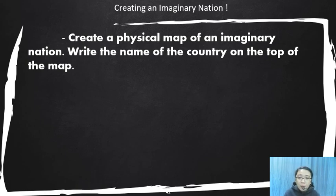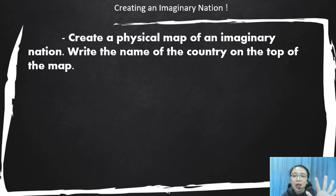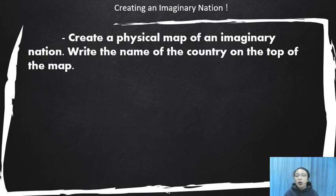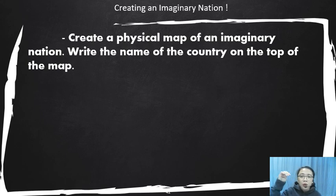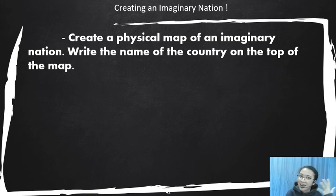Inside the map, you need to draw five unique land or water forms. For example, you can place a waterfall, and where the water falls, you can make it look like a Bermuda Triangle shape — create your own unique forms.